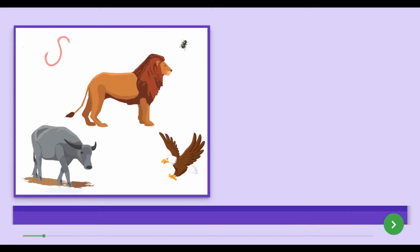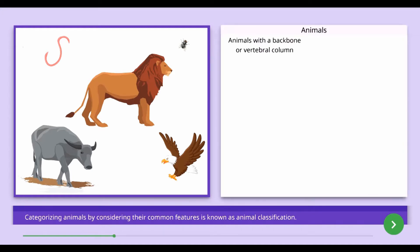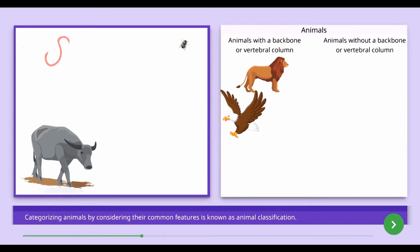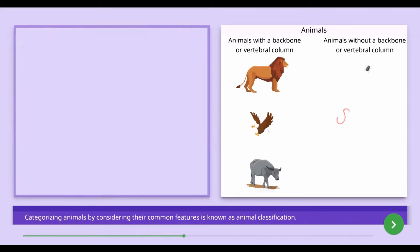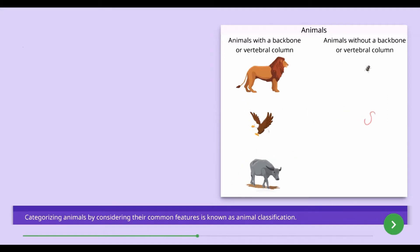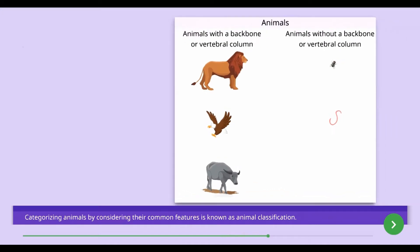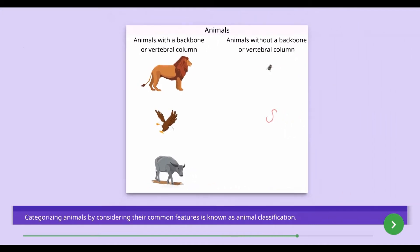First we will see what is known as animal classification. Categorizing animals by considering their common features is known as animal classification. We can classify animals based on different criteria. Animals can also be classified into two groups based on the presence or absence of a backbone or vertebral column.